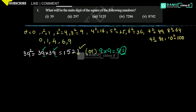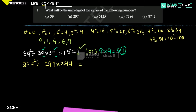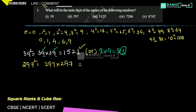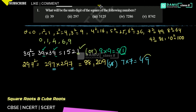Next one is 297 squared. 297 into 297 = 88,209. Or you can take the unit digit method: unit digit is 7, so 7 into 7 = 49. Unit digit of 49 is 9. So for this, unit digit is equal to 9.